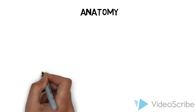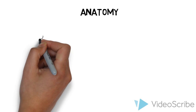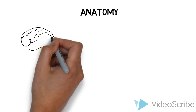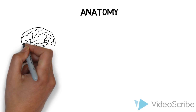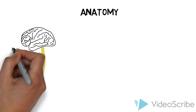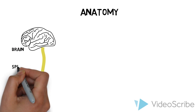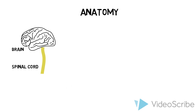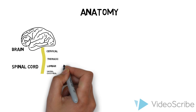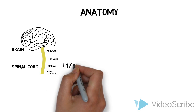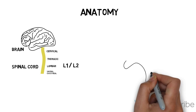Anatomy. To better understand SCCs, or spinal cord compressions, we should understand the basic anatomy of the spinal cord. The spinal cord is a vital link between the brain and the body. It can be divided into the cervical, thoracic, lumbar, sacral, and coccygeal sections. In adults, it is a single tubular structure from the base of the skull to the L1-L2 vertebrae.